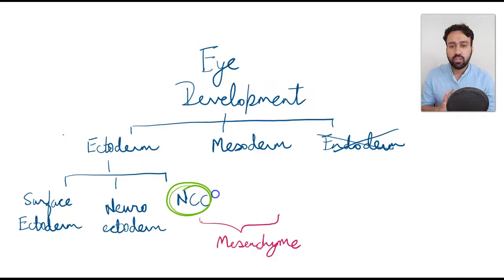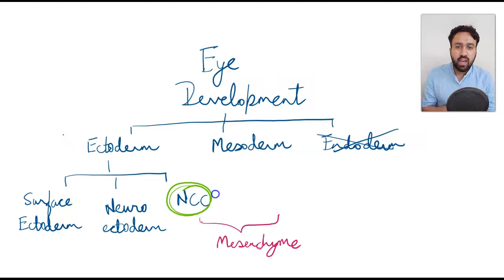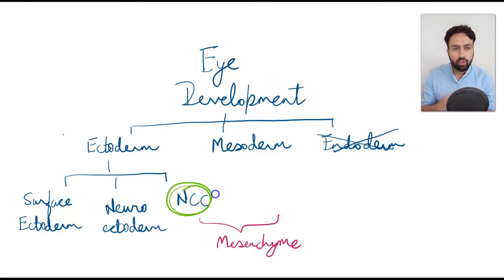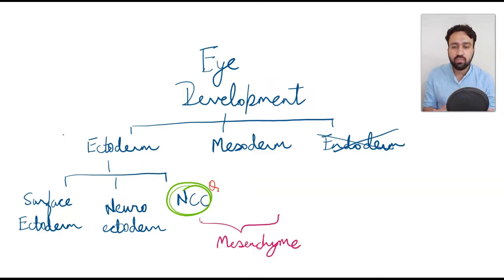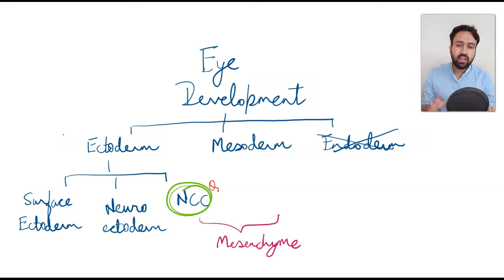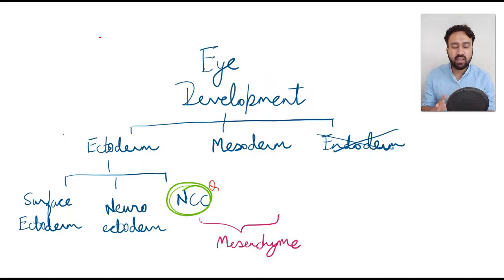We only have ectoderm and mesoderm. The ectoderm further has three parts that help in the formation of the eye and its parts: the surface ectoderm, the neuroectoderm, and the neural crest cells. Most of the structures of the human eye are derived from neural crest cells — that's one MCQ right there. Neural crest cells and mesoderm together form a layer known as the mesenchyme.